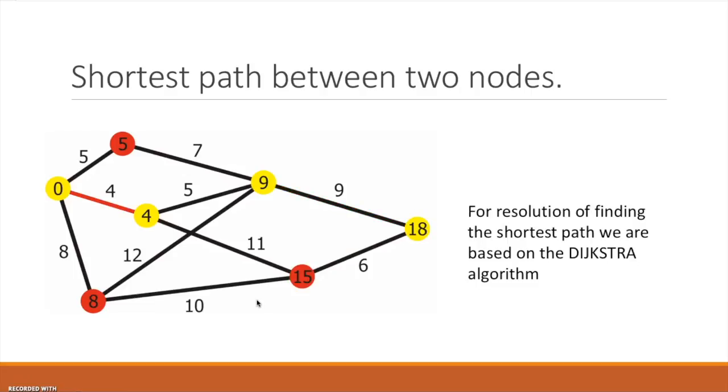Also called algorithm of minimum paths, is an algorithm for determining the shortest path from a given vertex origin to the rest of the vertices in a graph with weighted edges.